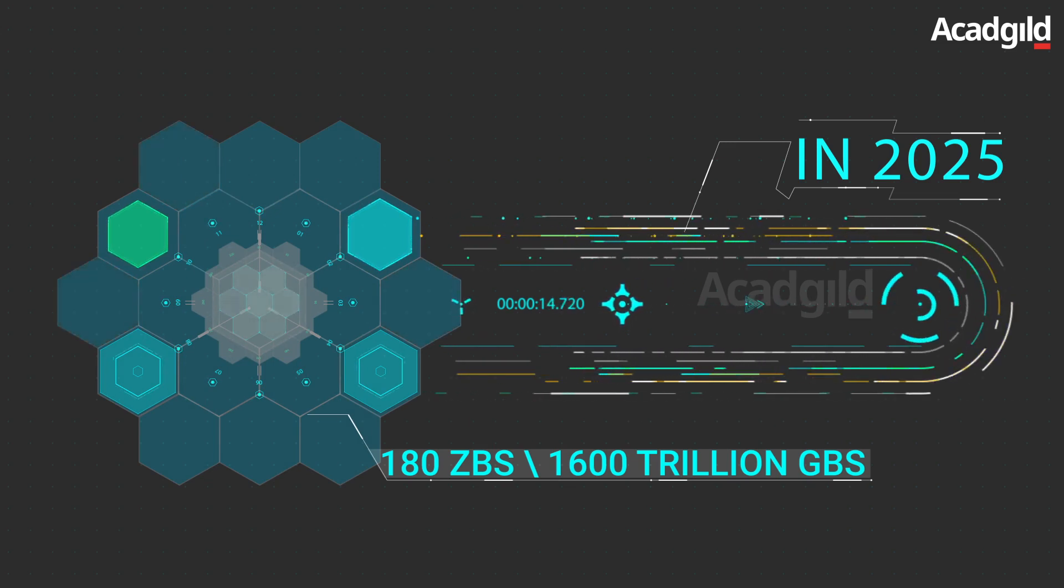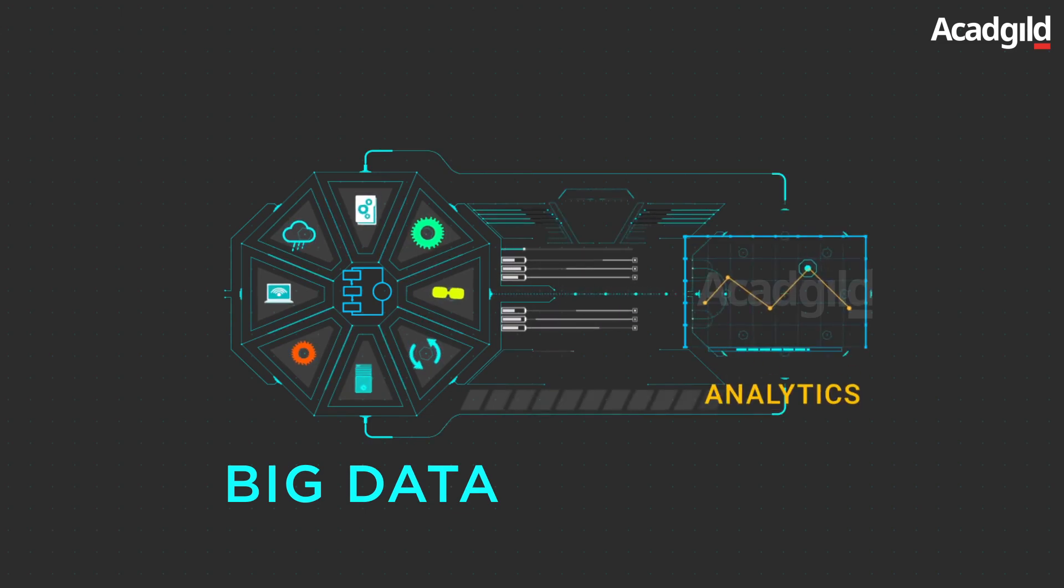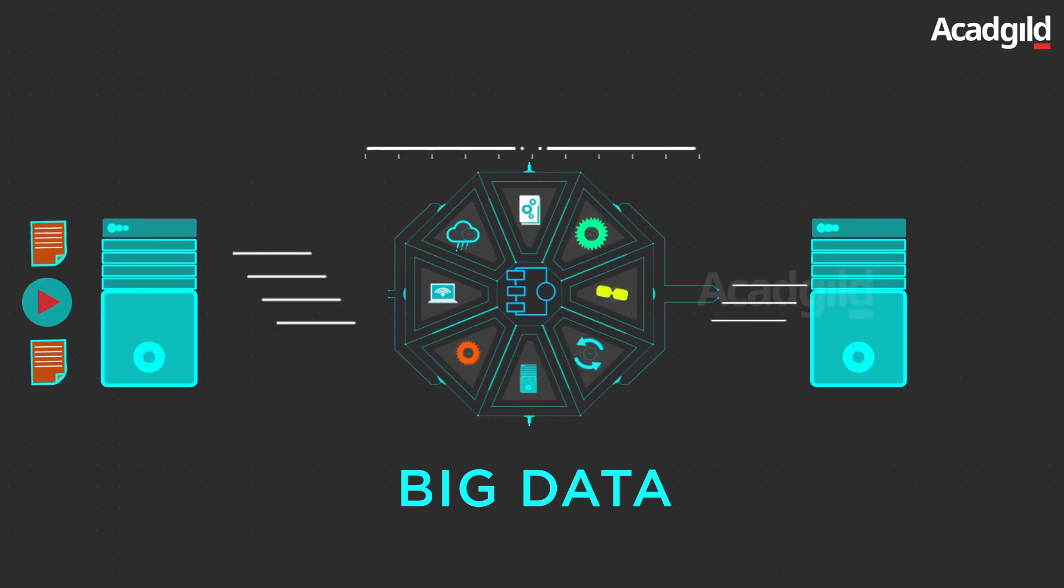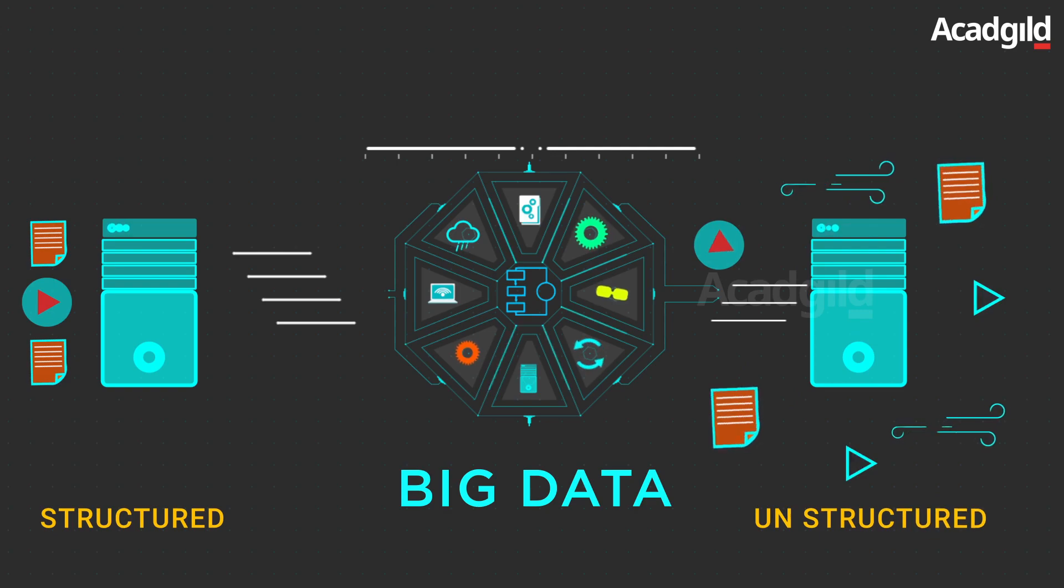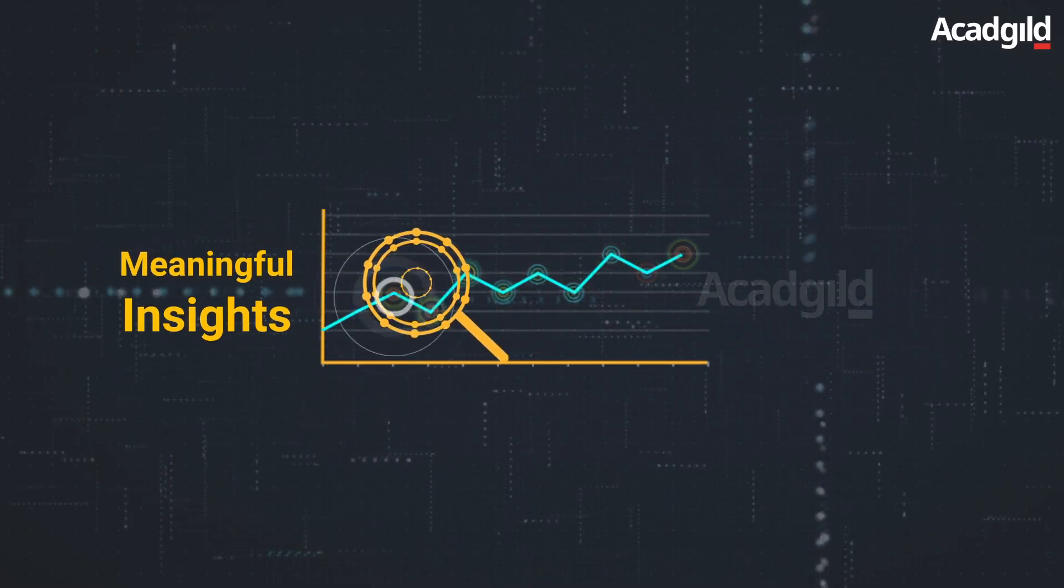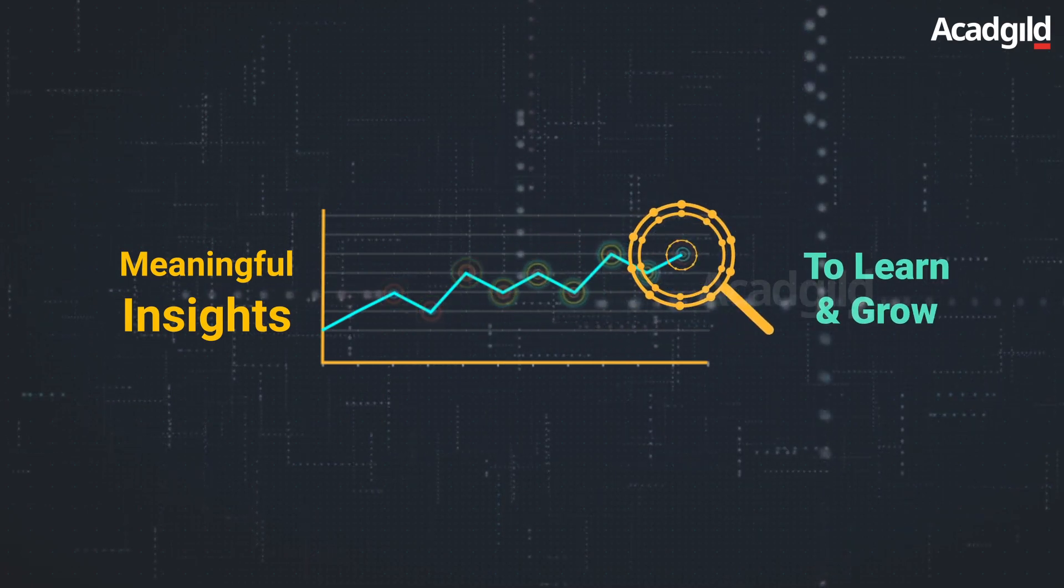Thus, it is important to understand what big data is before we study about data analytics. So what is big data, and how is it related to data analytics? Big data is a large volume of data that consists of both structured and unstructured data forms, helps organizations to draw meaningful insights from their data to learn and grow. Thus, it's the data that matters, and not its volume.